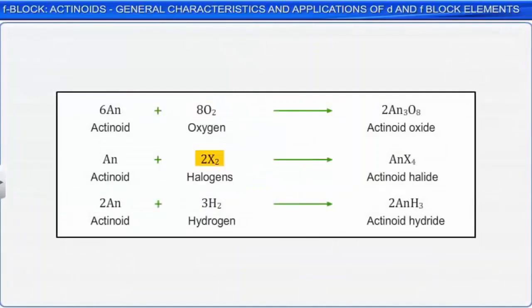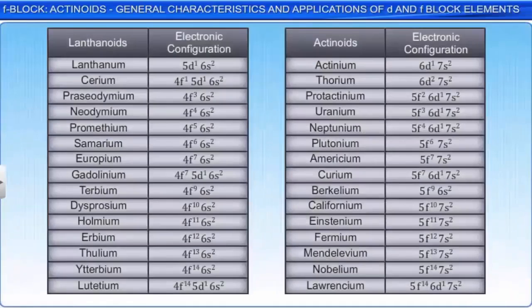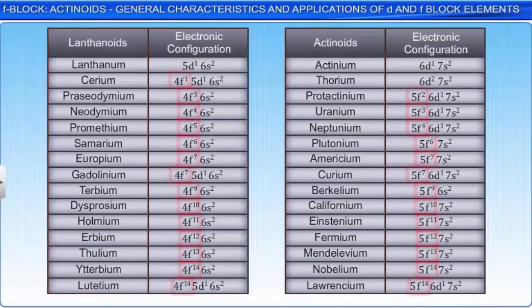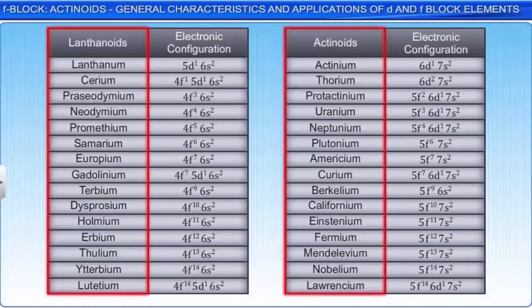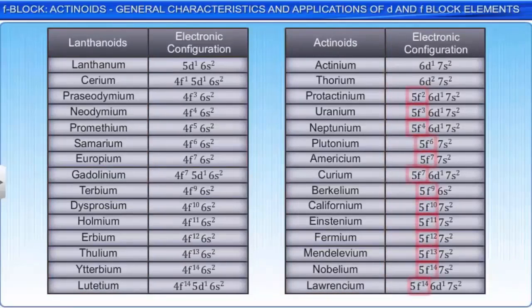Since in both series of elements the f orbital is progressively filled, the two series of elements resemble each other. On the other hand, they differ from each other due to the lower binding energies of the 5f electrons in actinides than those of the 4f electrons in lanthanides. The important differences between the lanthanoids and the actinoids are summarized in the table.